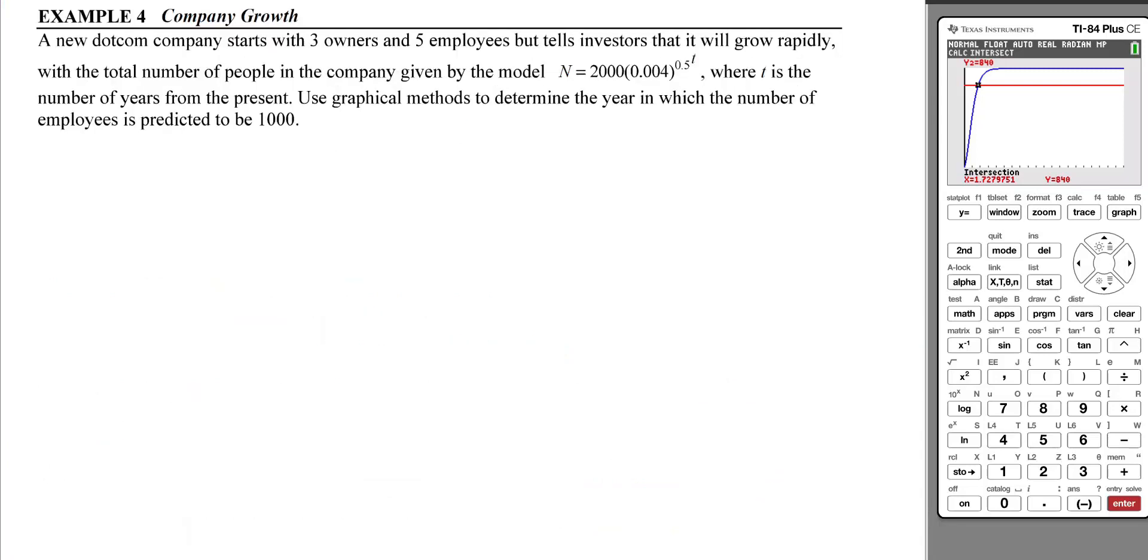Example 4: Company Growth. A new dot-com company starts with 3 owners and 5 employees but tells investors that it will grow rapidly, with the total number of people in the company given by the model N = 2000(0.004)^(0.5^T), where T is the number of years from the present. Use graphical methods to determine the year in which the number of employees is predicted to be 1000.